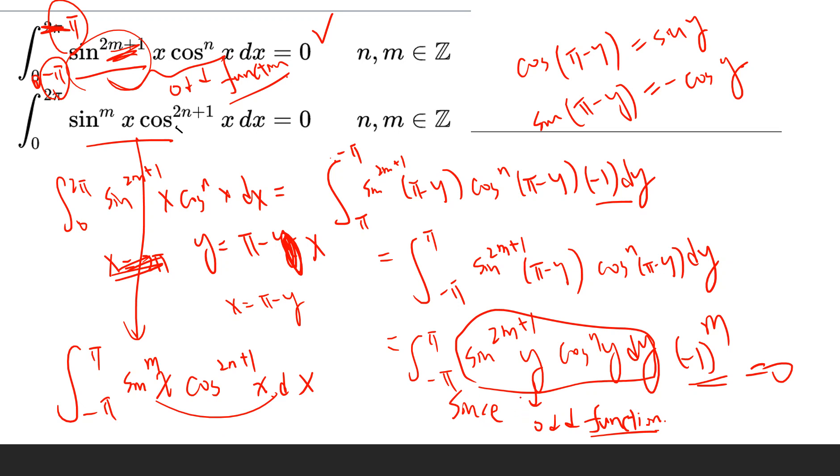So basically, if m is odd, then this is still an odd function, so this is zero.